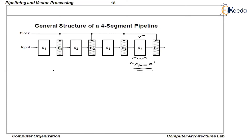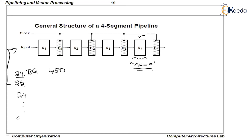For that reason, the instruction which follows the branch instruction cannot be sent into the pipeline unless the current conditional branch instruction gets completely executed. This is also a difficulty because it also requires stall cycles. Between instruction 24 and 25, there has to be a sufficient number of gaps — maybe three stall cycles — after which either the 25th or the 450th instruction follows, based on whether the condition is satisfied or not. This hazard is going to affect the performance of the pipeline.